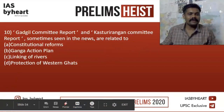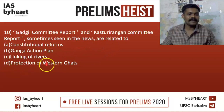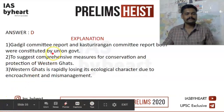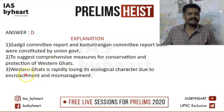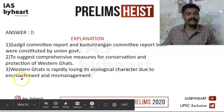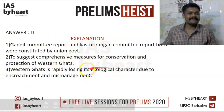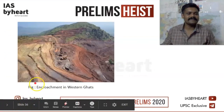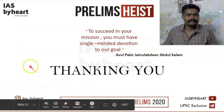Our last question: the Gadgil Committee Report and Kasturirangan Committee Report are related to — Option D: protection of the Western Ghats. These committees were formed by the Union Government due to rapid loss of the Western Ghats' ecological character caused by encroachment and mismanagement. The Union Government of India formed these committees for the conservation and protection of the Western Ghats. That is the end of our session — thank you so much for your valuable time.